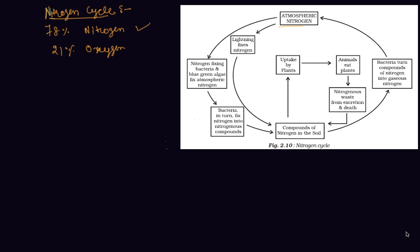That is what we have shown in the Nitrogen Cycle diagram. As you can see here, this is the atmospheric Nitrogen. Nitrogen-fixing bacteria and blue-green algae fix atmospheric Nitrogen, or lightning fixes Nitrogen, and these are converted into compounds of Nitrogen in the soil.